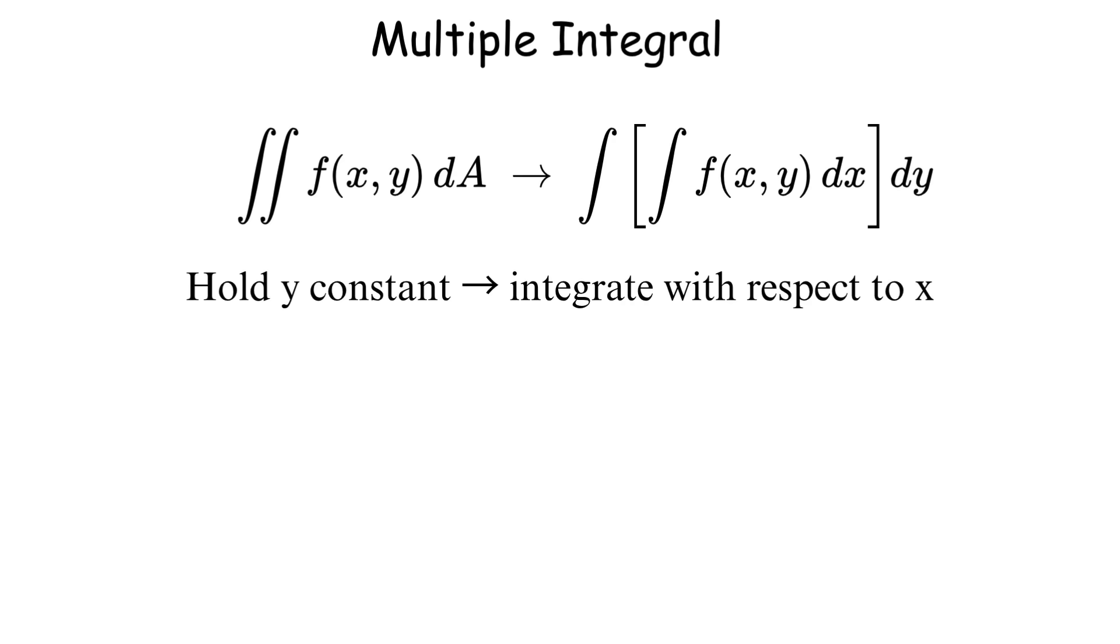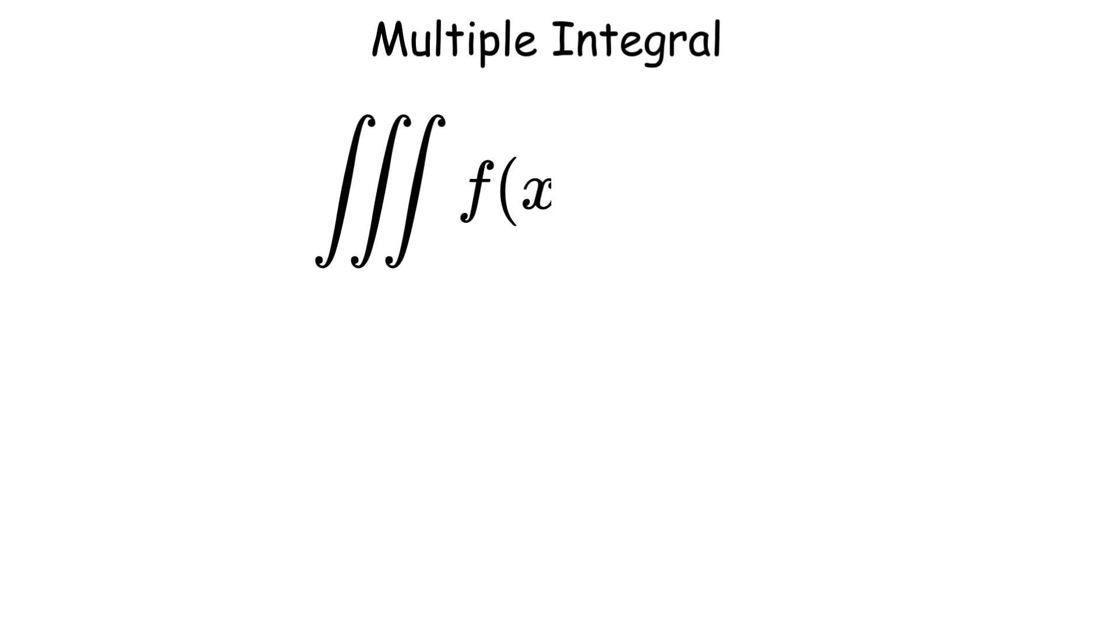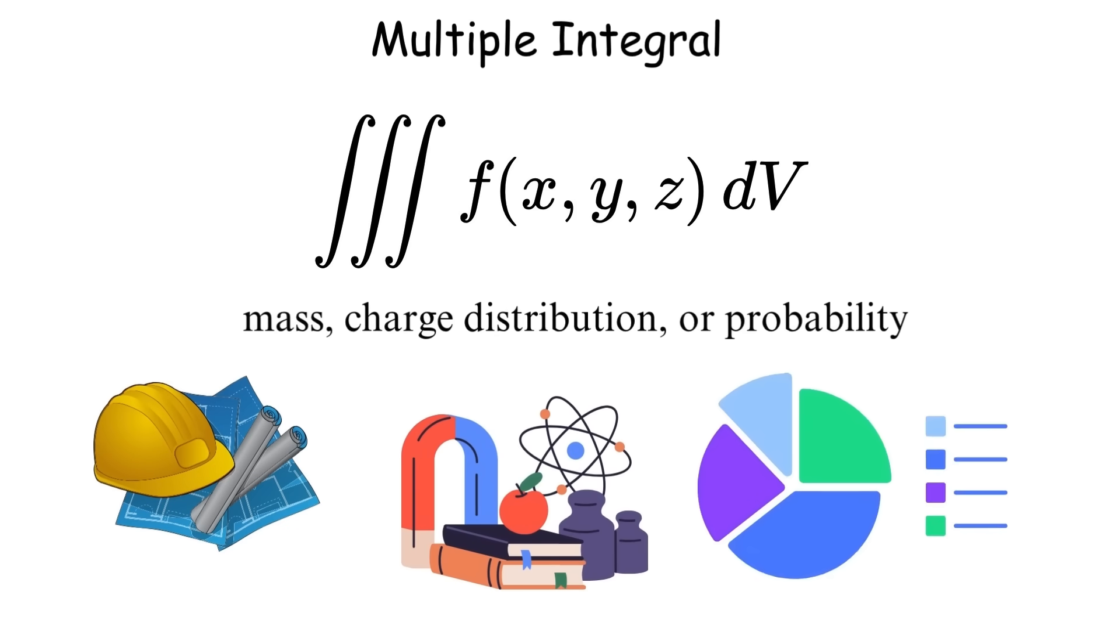First with respect to one variable while treating the other as constant, then with respect to the second variable. Triple integrals work the same way, but in three dimensions, giving you things like mass, charge distribution, or probability in 3D space. These are fundamental in engineering, physics, and statistics.